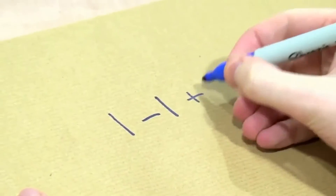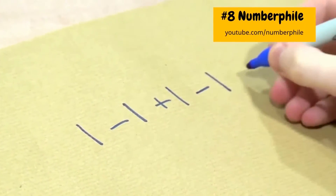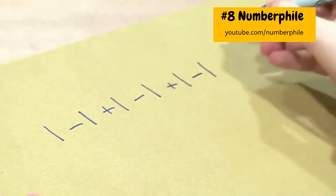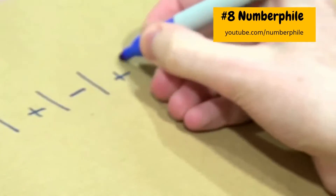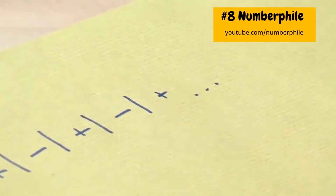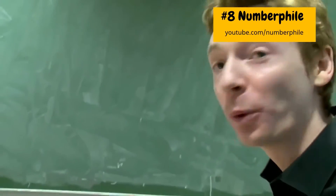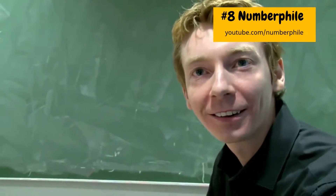I'm going to add one, then subtract one, then add one, then subtract one, then add one and subtract one, and I'm going to do this forever. You get the idea. So what does that equal?